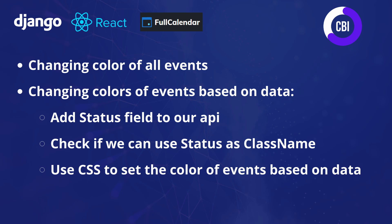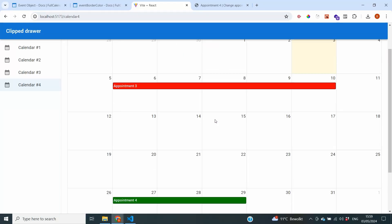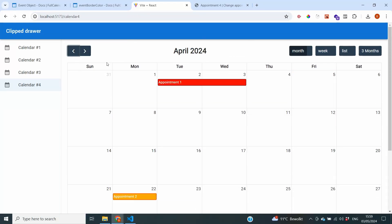First, I'll show you how to change the color of all events on the calendar. Next, we'll change colors based on data — we'll add a status field to our API, set that status as the class name inside Full Calendar, and use CSS to set event colors based on the data. In the end, it will look something like this.